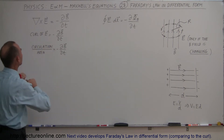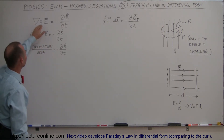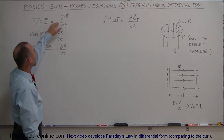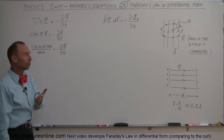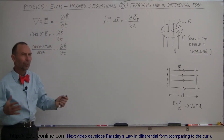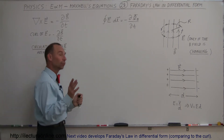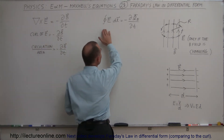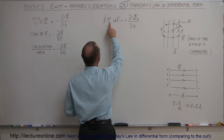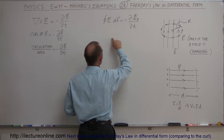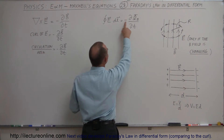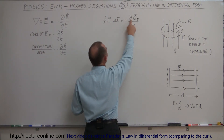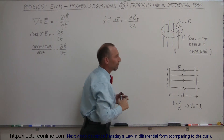Here's the differential form of the equation, where we can say that the curl of the electric field is equal to the negative of the changing of the B field with respect to time — the change in the magnetic field with respect to time. For reference, here is the integral form of the equation, where the line integral of the electric field around a loop or any curve is equal to the negative of the changing magnetic flux with respect to time.